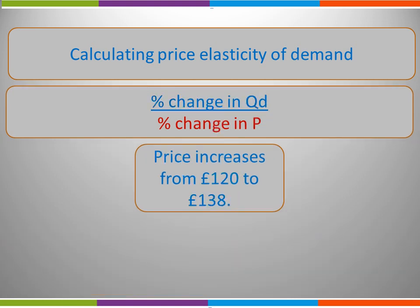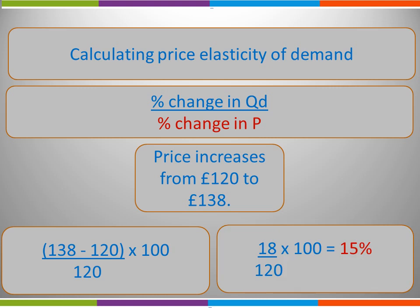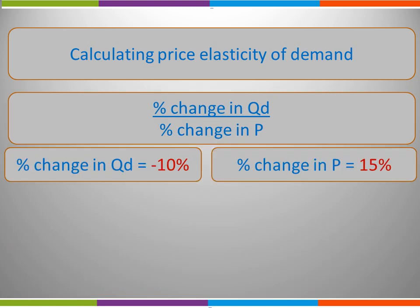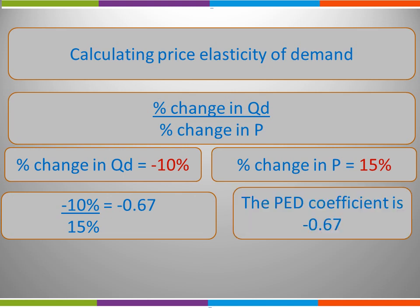Secondly, we calculate the bottom line of our formula. The price increases from £120 to £138. So we take the change, or the difference, divided by the original and multiply by 100. This gives us a percentage change in price of 15%. We now have the two necessary parts of our formula. Percentage change in quantity demanded was minus 10%; percentage change in price was 15%. This gives us a PED coefficient of minus 0.67.